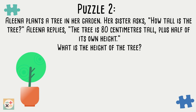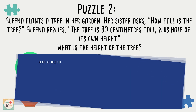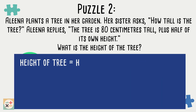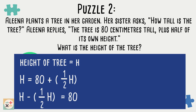For puzzle two, we will use the variable H to represent the height of the tree. The height equals 80 centimeters plus half of the height. Now we can rearrange the equation so both H variables are on one side of the equals sign.